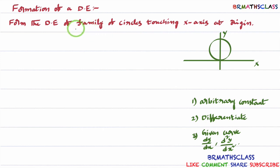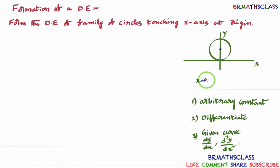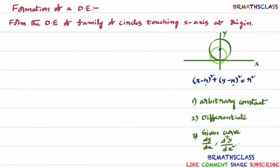First, we will try to understand what is the equation of family of circles touching x-axis at origin. In the circles chapter, we learned that if a circle touches x-axis, then its center definitely lies on y-axis. We know the equation of a circle whose center is (h, k) and radius is r. As the circle touches x-axis at origin, its center lies on y-axis, so the x-coordinate of the center will be 0.